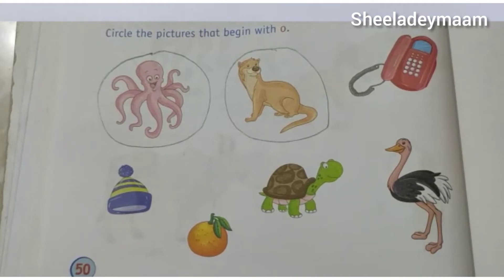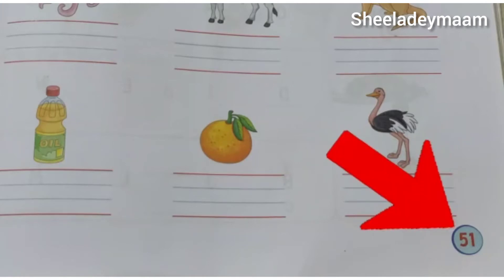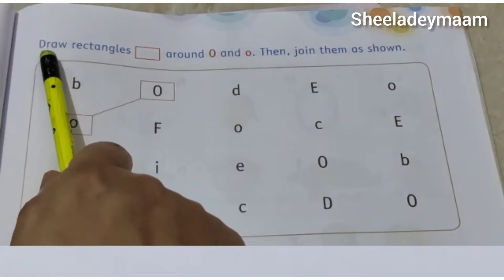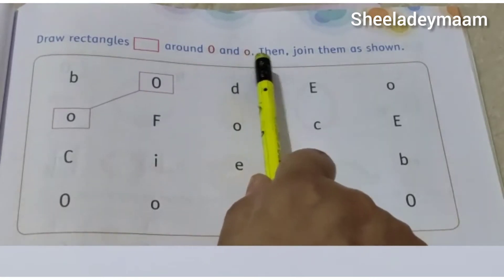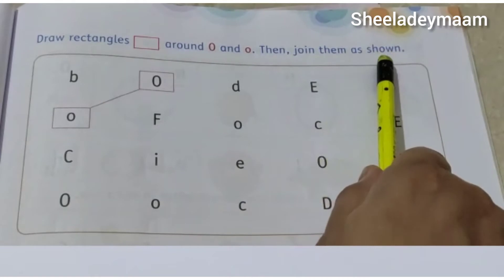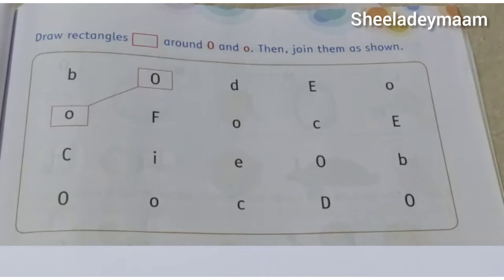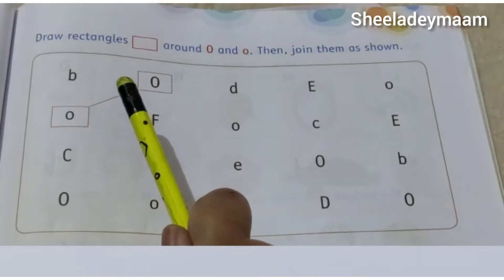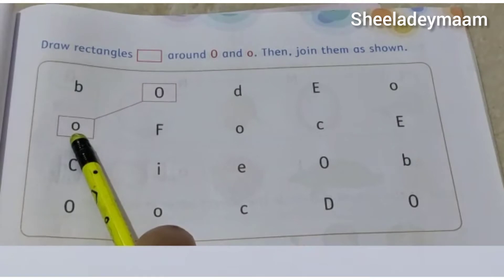Now let's move on to the next page. So this is page number 51. And our question is: draw red triangles around capital letter O and lowercase o, then join them as shown. So children, this is capital letter O, and this is lowercase o, or you can say small letter O.